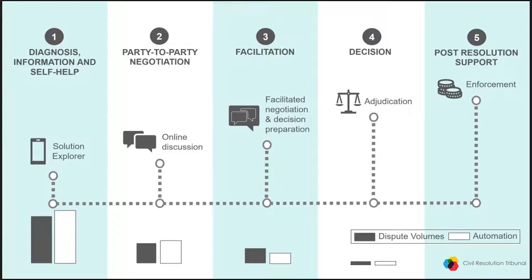This is a look at what the CRT's dispute resolution process looks like. The Solution Explorer is where diagnosis, information, and self-help happen. If the person gets through that and needs to start an application, they file their application, it gets screened into the tribunal, and then they give the other parties notice. One of the first activities is online negotiation to see if the parties can resolve it just by talking to each other — to take the cream of cases out of the system that only need a tiny bit of help to reach a resolution by agreement.